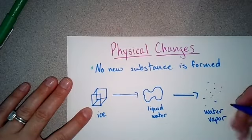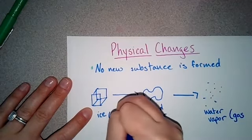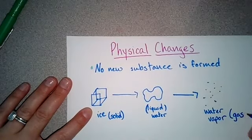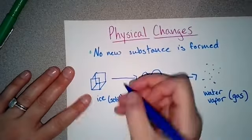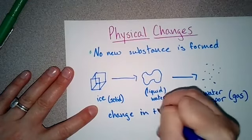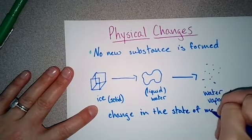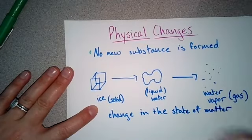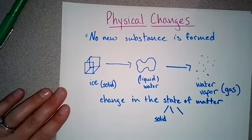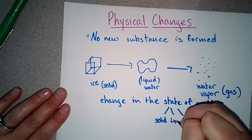All right. And so all this is, water vapor is a gas. So this went from a solid, which is ice, to a liquid, which is water, to a gas, which is water vapor. This is a change in the state of matter. So the states are solids, liquids, and gases, right?